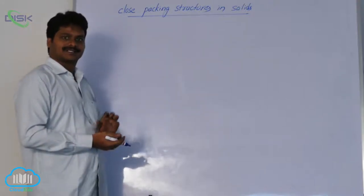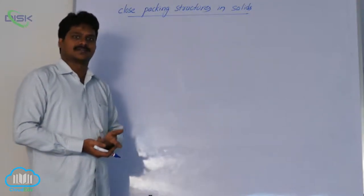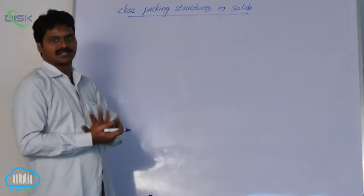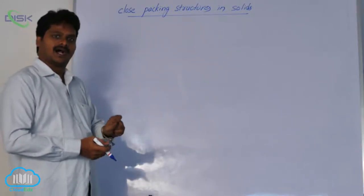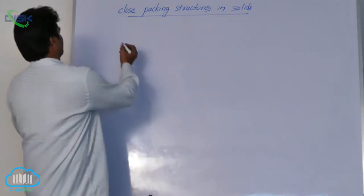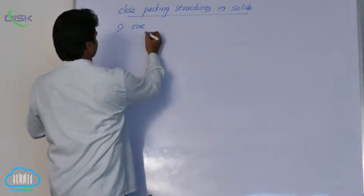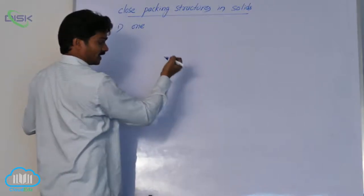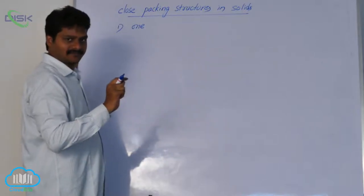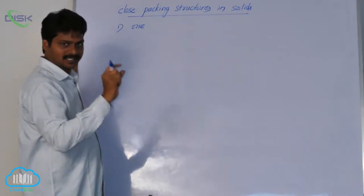In order to discuss about the three-dimensional structures of solids, first we have to know the one-dimensional, two-dimensional, and after that three-dimensional. First, let us discuss about one-dimensional packing of spheres. Here, we consider the particles of a solid as hard, incompressible spheres.